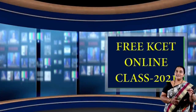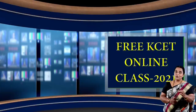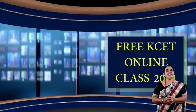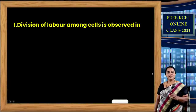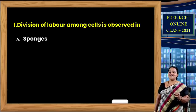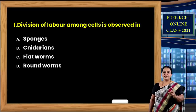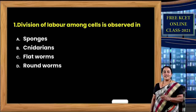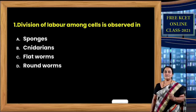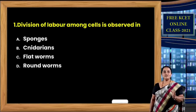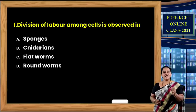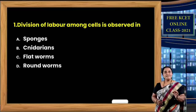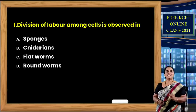With this brief introduction, I will conclude the explanation of Kingdom Animalia and take you to the question series. Hope that before I tell the answer, you will definitely get the answer from the given options. Welcome to question number 1: Division of labor among cells is observed in — options are sponges, cnidarians, flatworms, and roundworms.